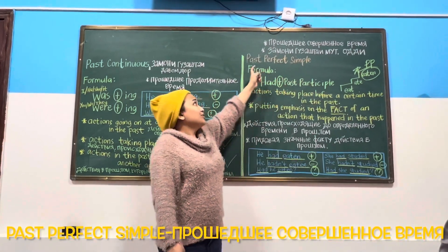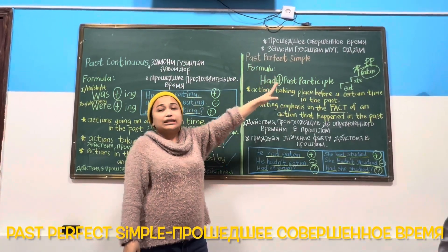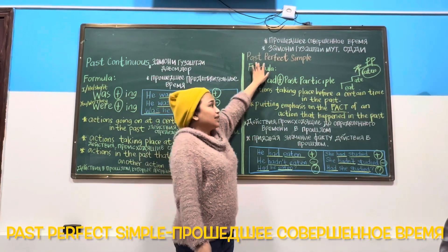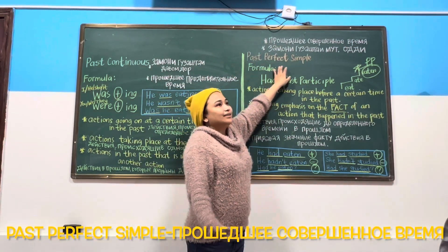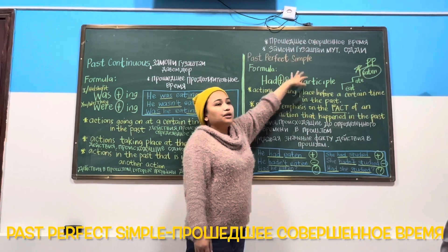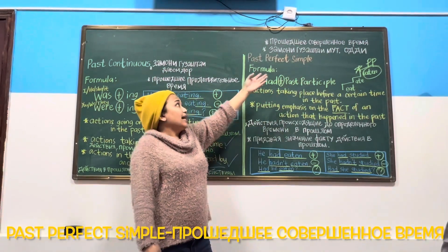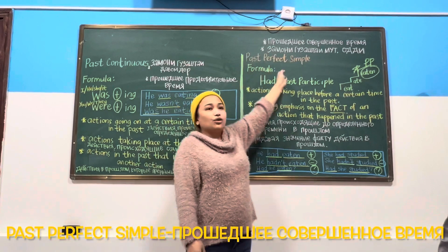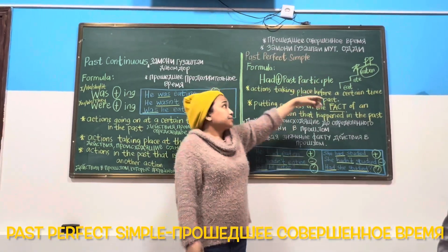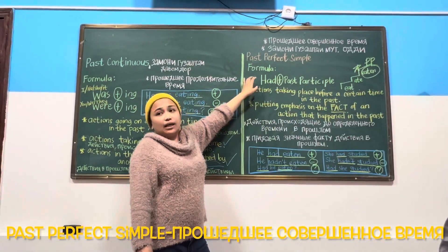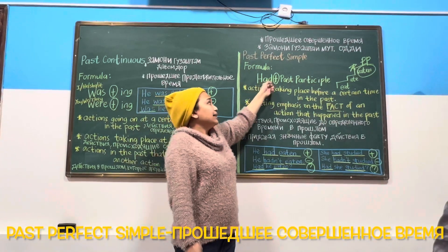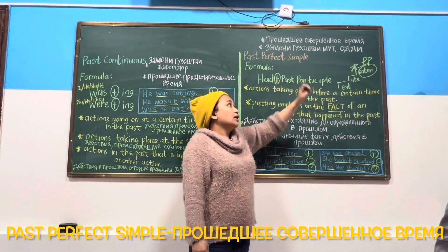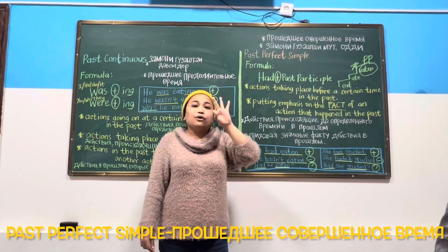In Tajik: zamoni guzashtay mutlaki odi. In Russian: proshedshee sovershennoye vremya — past perfect. The formula is: had plus past participle. What is past participle?